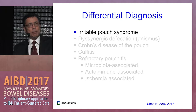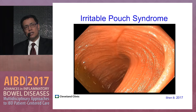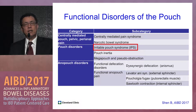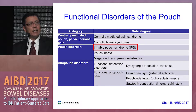Irritable pouch syndrome, by definition, presents with normal mucosa on endoscopy, biopsy, and histology, though you can see a spastic pouch on endoscopy. The functional pouch disorder has several categories, and the majority of patients with functional pouch disorder have irritable pouch syndrome. The next most common is anismus.